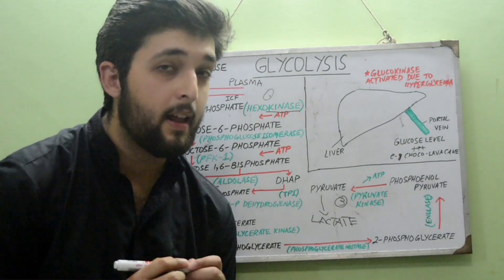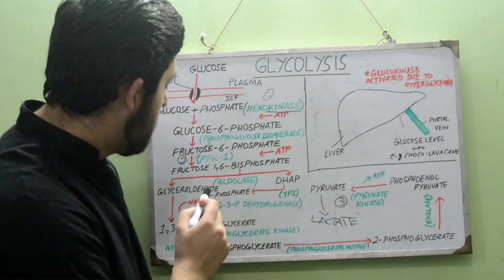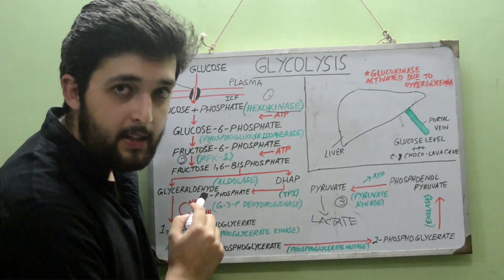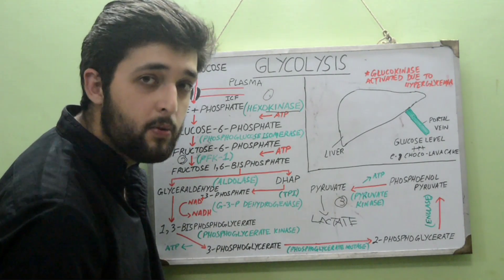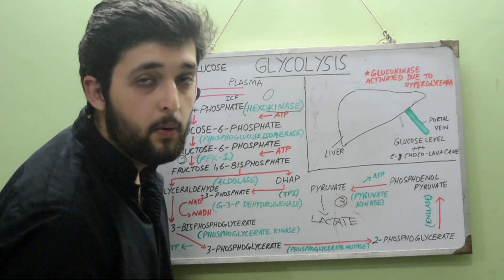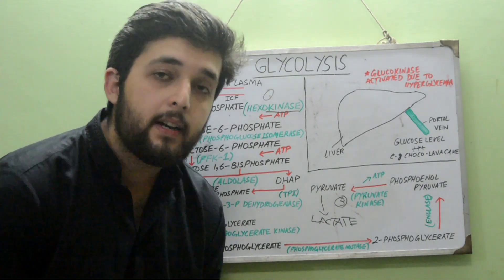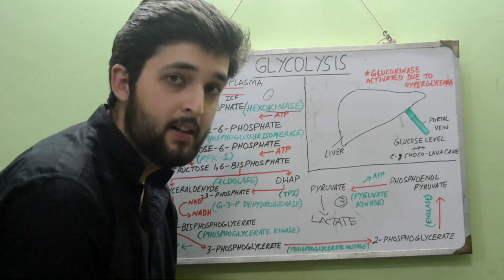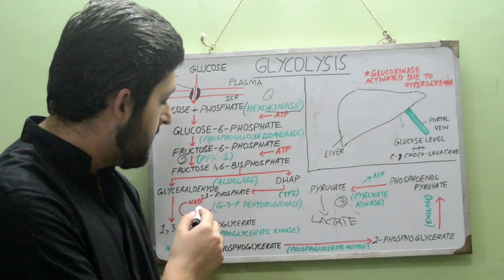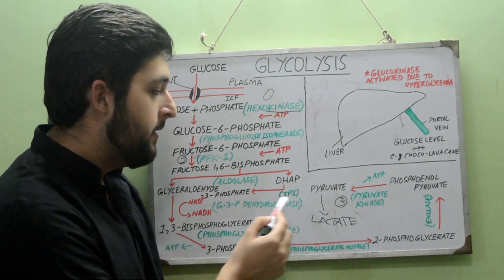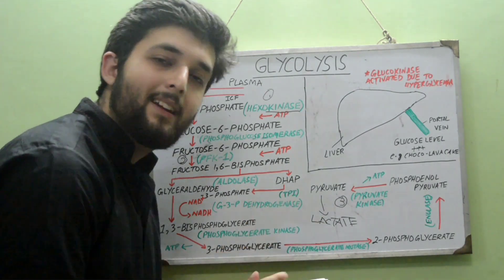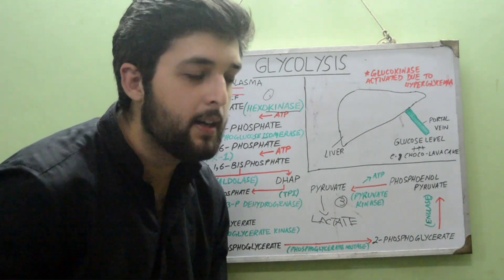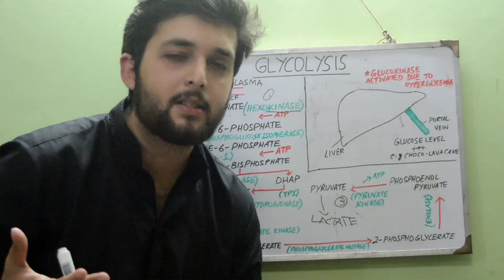Pyruvate is converted to lactate by lactate dehydrogenase. This is necessary because NAD⁺ is available in a finite amount; if it is continuously converted to NADH, the glyceraldehyde-3-phosphate dehydrogenase step would stop and glycolysis would halt. Converting pyruvate to lactate re-oxidizes NADH back to NAD⁺. Lactate buildup causes muscle pain and fatigue, and is later oxidized in the liver.